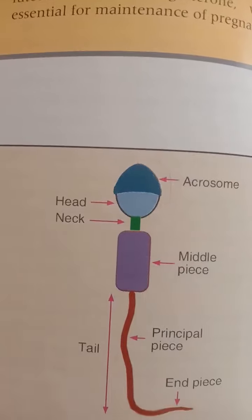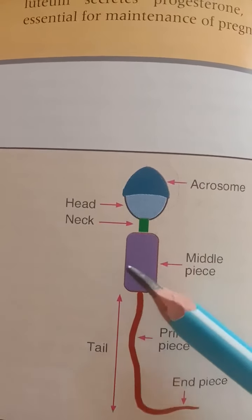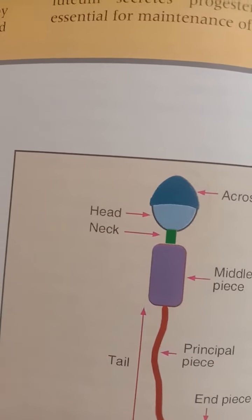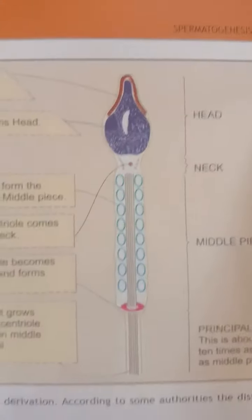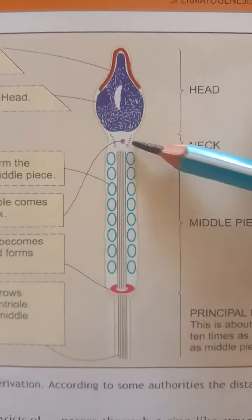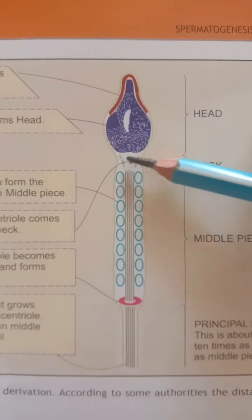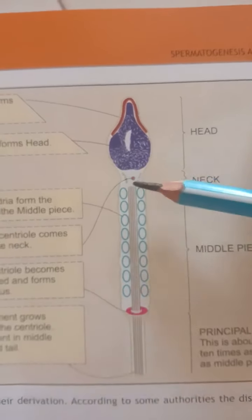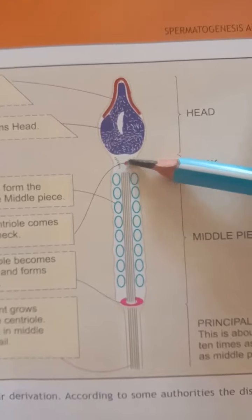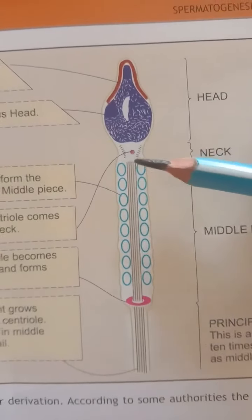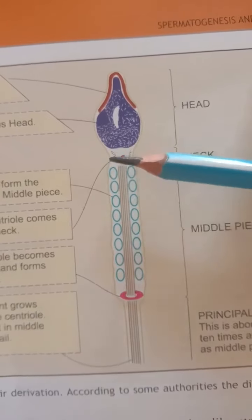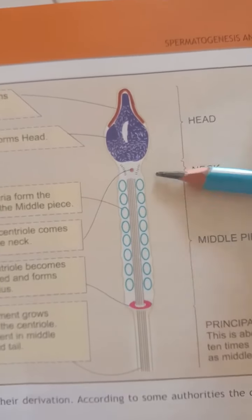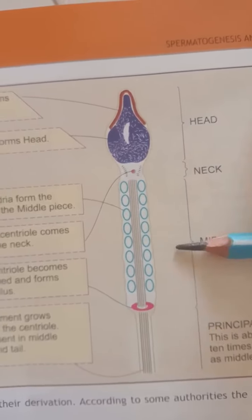Then there is the neck. The neck is narrow and consists of a funnel-shaped basal body and a spherical centriole. Here in this diagram you can see the neck. It consists of a funnel shape — this is called the basal body — and centrally present is a structure called the centriole. The basal body is also called the connecting piece because it helps establish an intimate connection between the head and the remaining part of the spermatozoa.